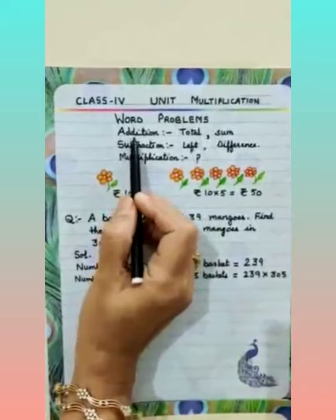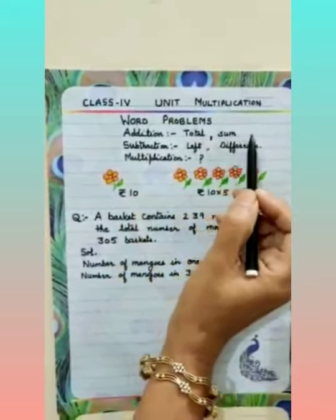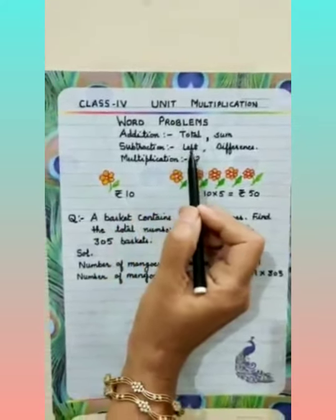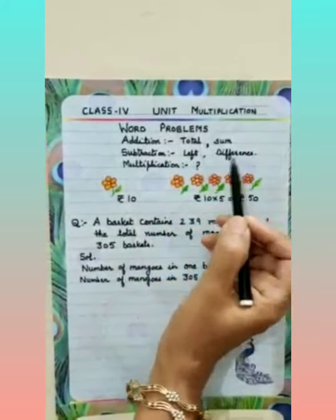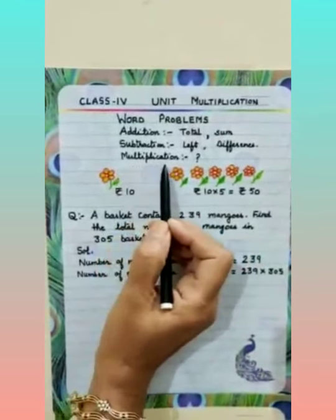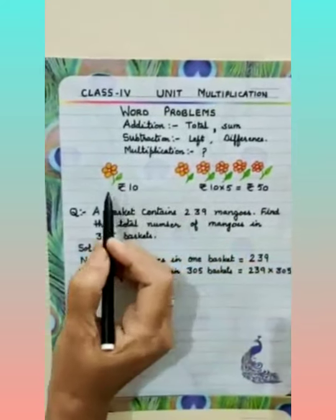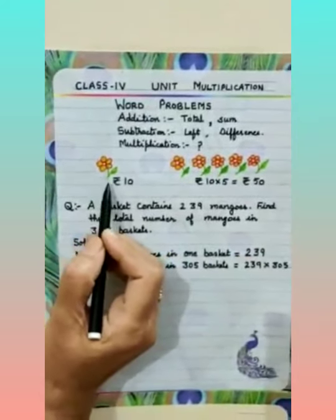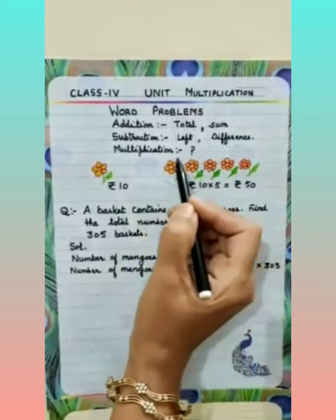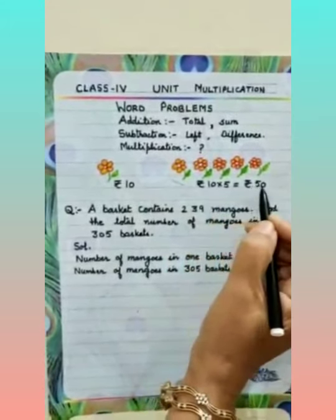In addition, what do we do? We find the total or find the sum. Same way, in subtraction word problems, we find what is left or what is the difference. Now in multiplication, one thing is given and we find out many. See this example: the cost of one flower is rupees 10. Find the cost of 5 flowers. Rupees 10 multiplied by 5 is rupees 50.